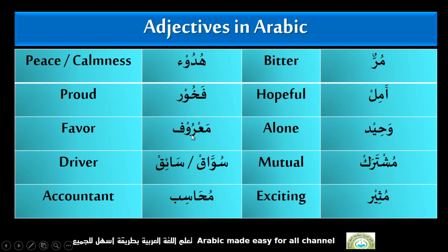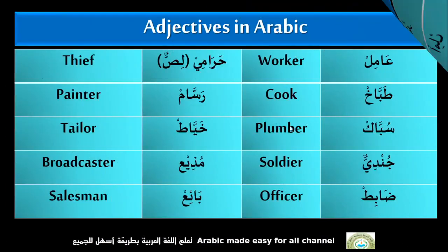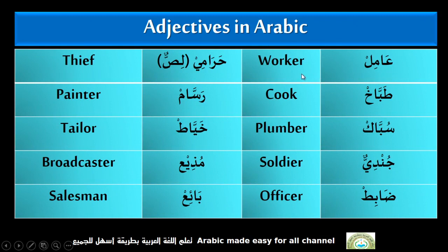Fakhurun — Proud. Be'arroofun — Fever. Suwaakun. Versaikun — Driver. Muhasibun — Accountant. Hamilun — Worker. Tabahun — Cook. Subbaak — Plumber. Jundiun — Soldier. Zawabitun — Officer. Harami, Lesterun — Thief. Rassam — Painter. Khayat — Tailor. Muzi — Broadcaster. Aayun — Salesman.